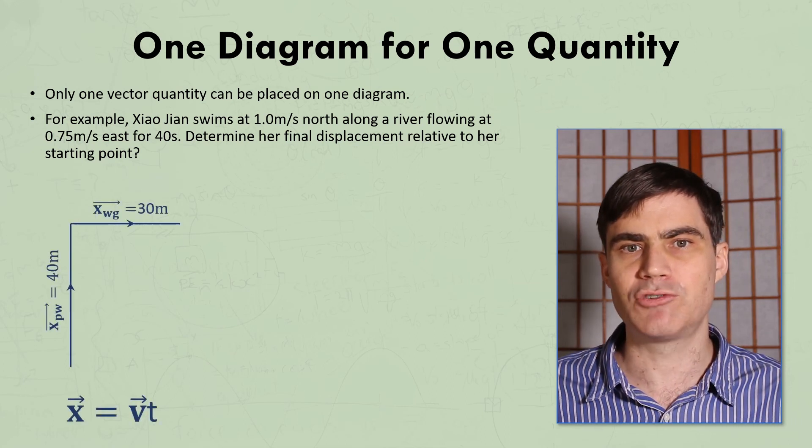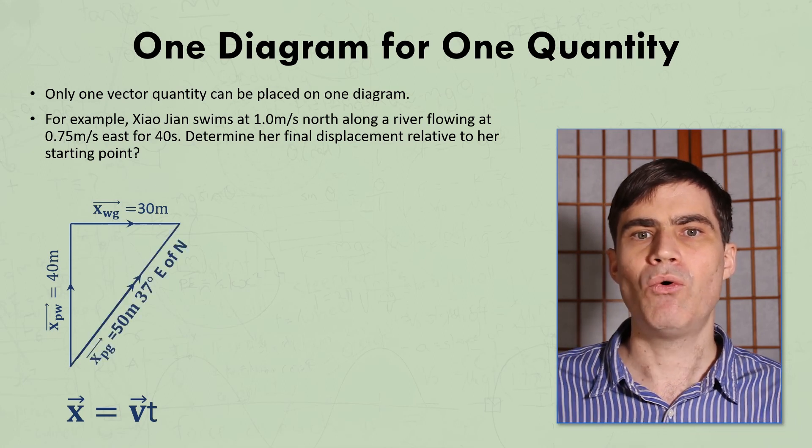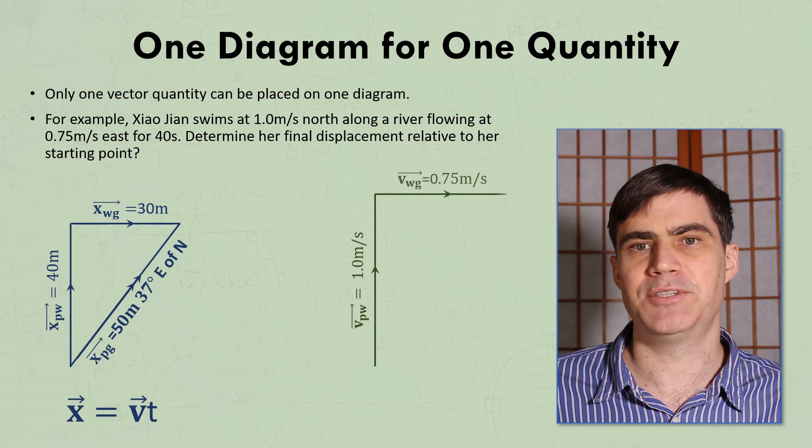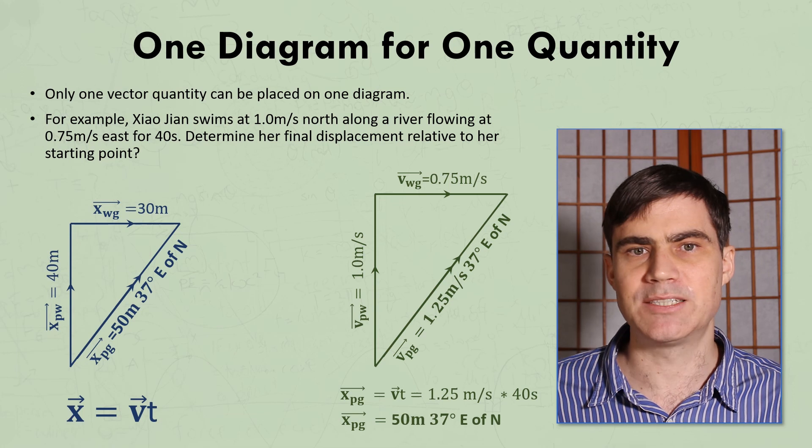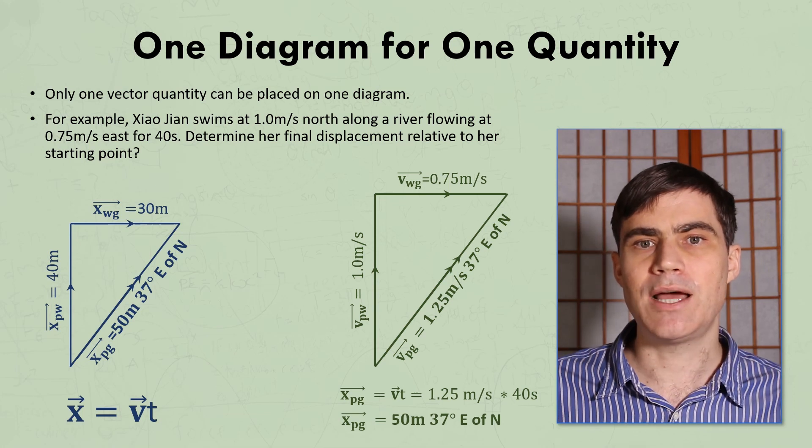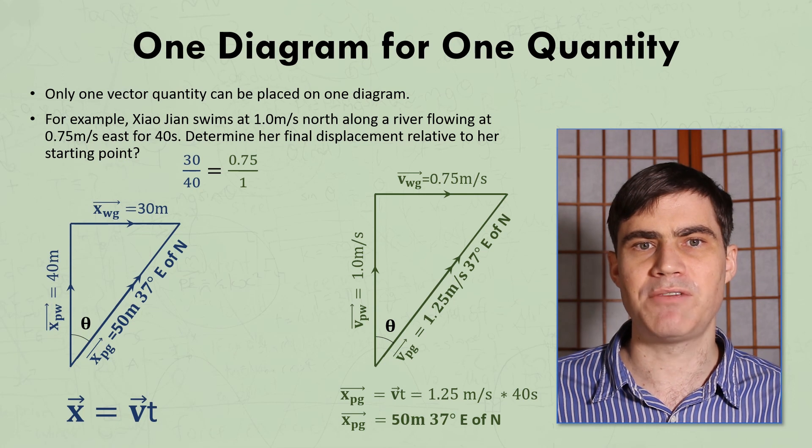and how far the river will pull her downstream during that time, and then add these displacements as vectors. Or else we could add the velocities together as vectors, and then find the resultant velocity, and use that to calculate her final displacement. These are similar triangles, so the angles are the same, so 30 over 40 is 0.75 over 1.